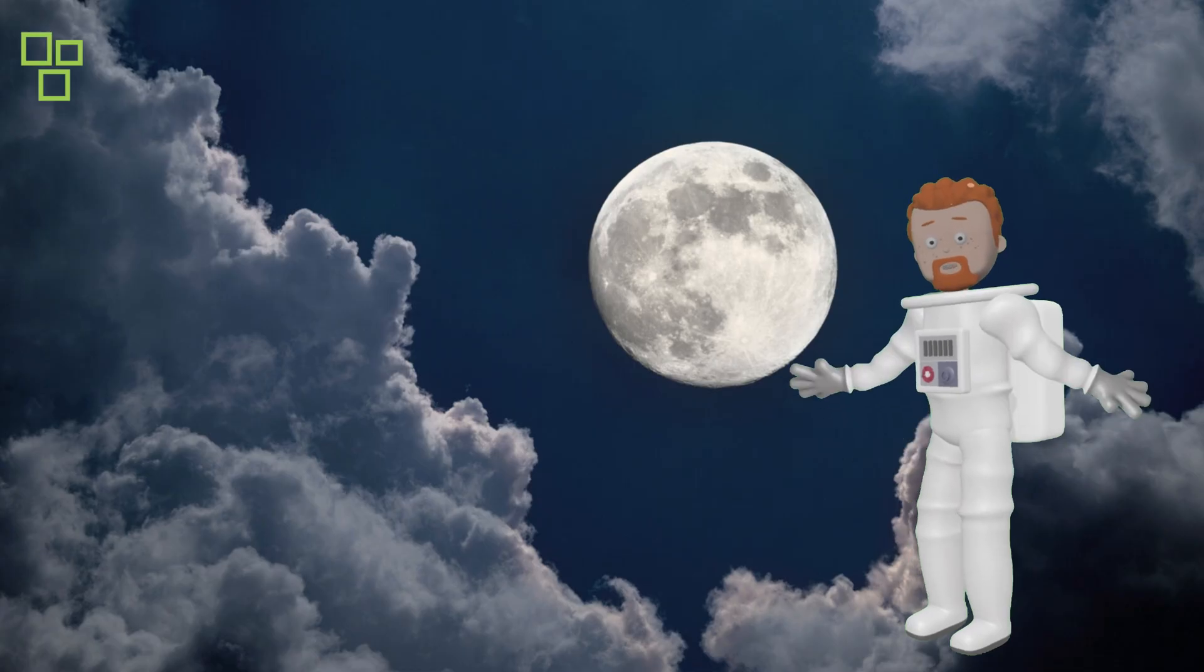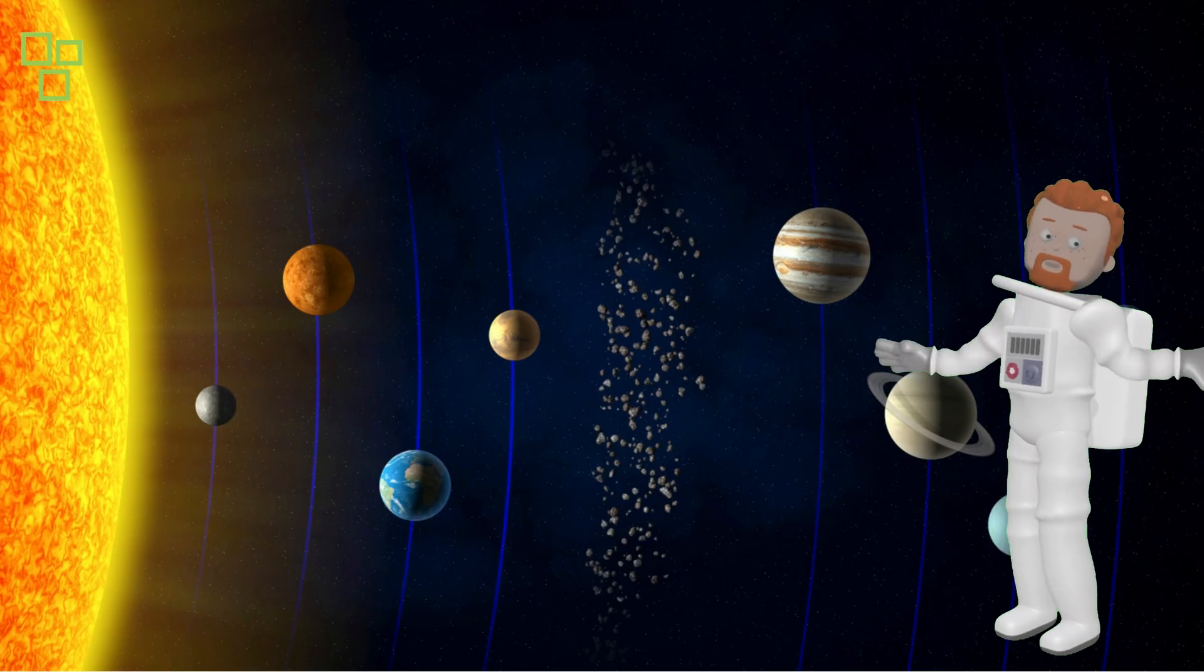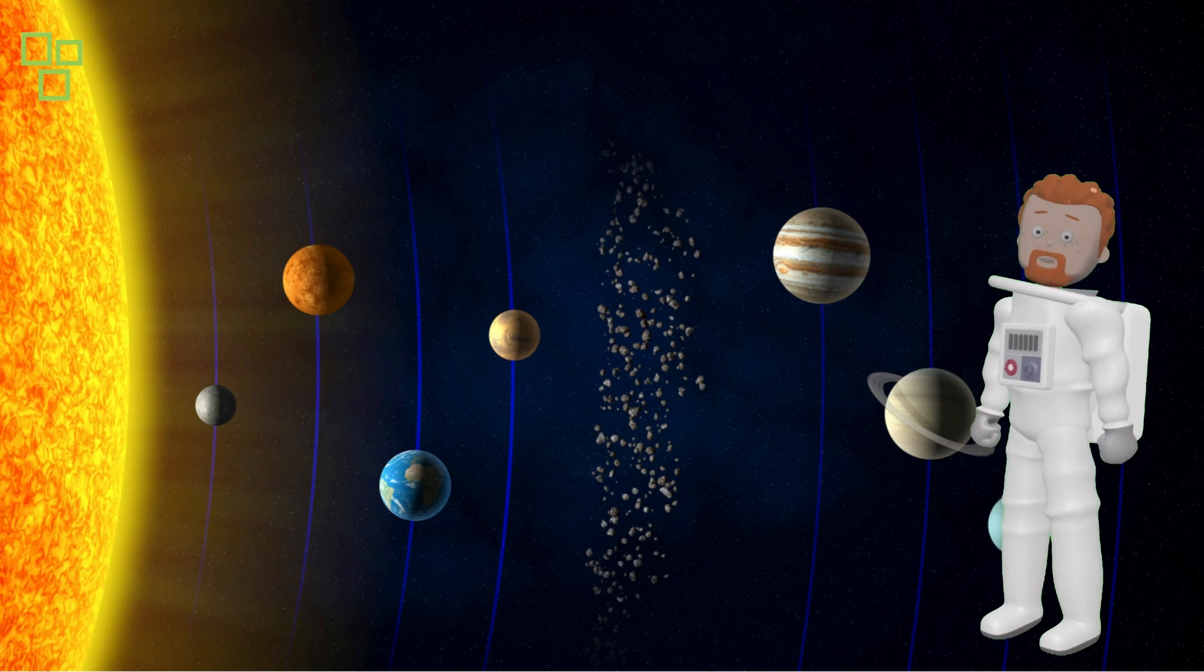Next, we'll soar past our moon and journey to the amazing world of asteroids. Asteroids are like space rocks that orbit the sun, and they can be found all over our solar system.